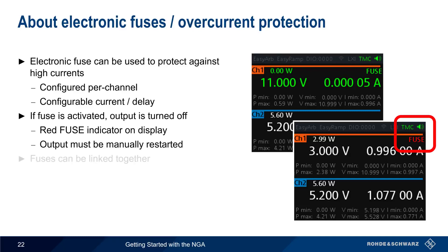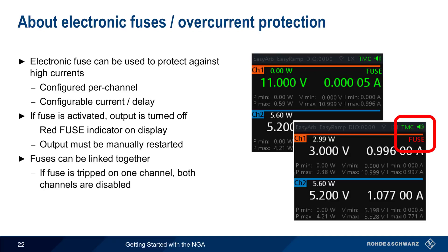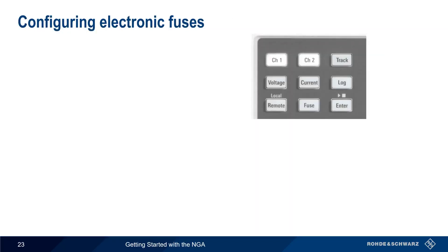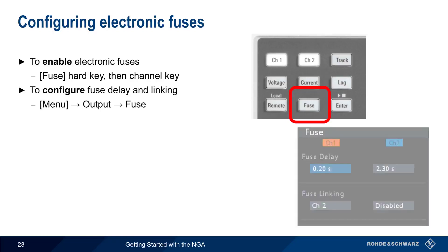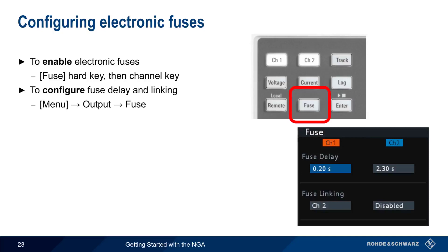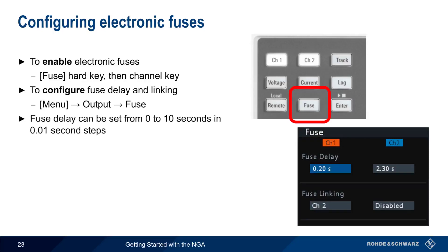Over current protection is provided in the form of an electronic fuse that protects against high currents. On the NGA, these fuses are configured per channel with a user-defined current and delay. If the fuse is activated, output is disabled and a red fuse indicator is shown in the display. After a fuse has been activated, the output must be manually restarted. In a dual-channel NGA, it's also possible to link fuses together. Fuses are enabled using the fuse hard key on the front of the NGA. Simply press fuse and then select the channel. To configure fuse delay and linking between channels, press the menu hard key and then select option fuse. The fuse delay can be set from 0 to 10 seconds in 10 millisecond increments, and fuse linking can also be enabled or disabled from this menu.